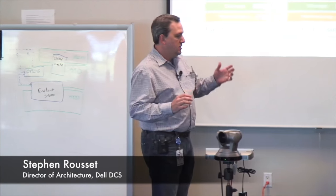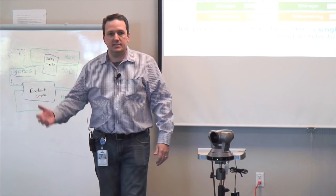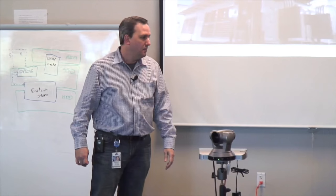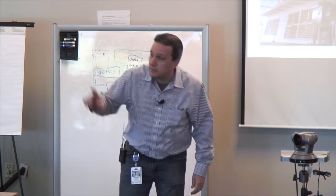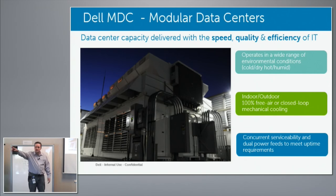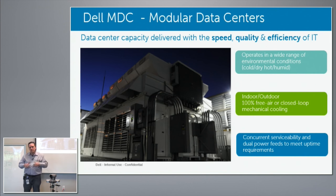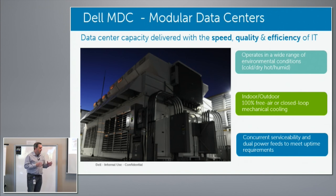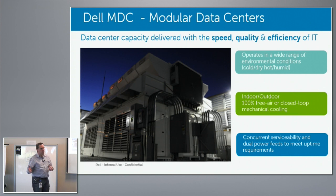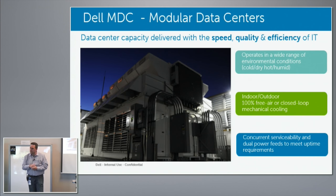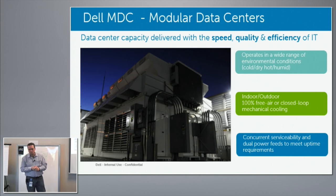As we talked about optimization of the server and rack, the next thing is optimizing the data center. Modular data centers — there's a cute little model up here, and if you look out that window kitty-corner back there, there's actually a modular data center sitting in the parking lot. This is about taking efficiency to the grandest scale — building as you grow. This particular model is a 24-rack model; the one in the parking lot is a 12-rack model. You can go all the way up to one megawatt placement.